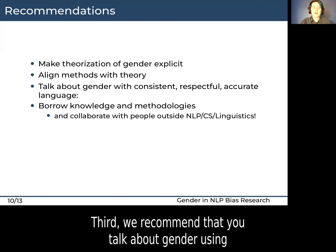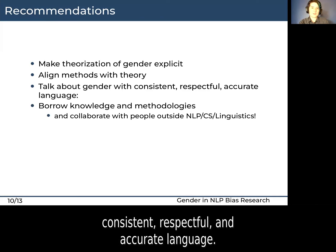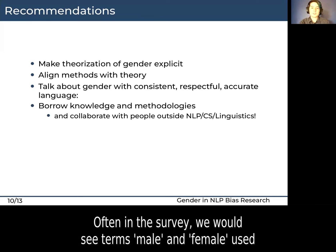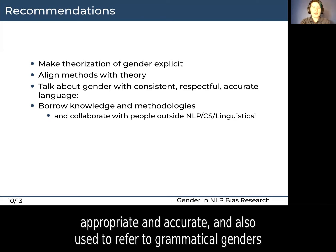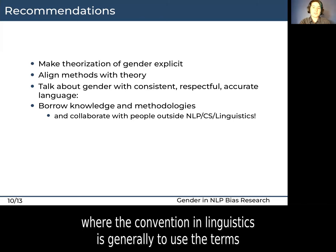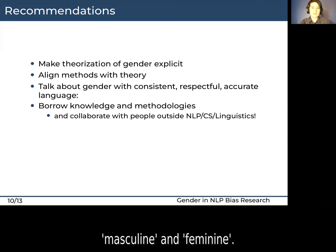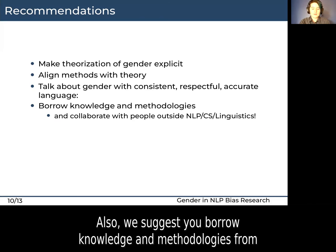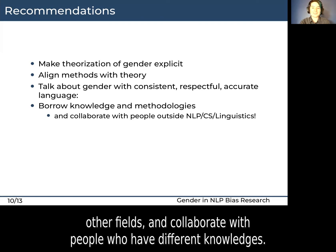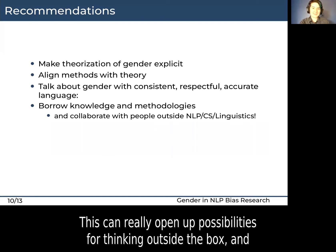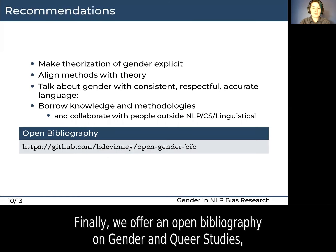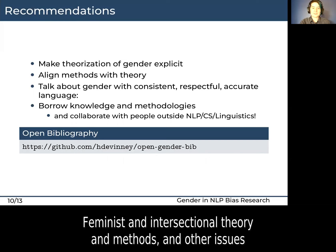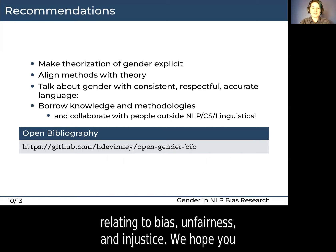Third, we recommend that you talk about gender using consistent, respectful, and accurate language. Often in the survey we would see terms like male and female used to refer to people, where men and women would be more appropriate and accurate, and also used to refer to grammatical genders, where the convention in linguistics is generally to use the terms masculine and feminine. We also suggest that you borrow knowledge and methodologies from other fields and collaborate with people who have different knowledges — this can really open up the possibilities for thinking outside the box and producing novel methods for being inclusive. Finally, we offer an open bibliography on gender and queer studies, feminist and intersectional theory and methods, and other issues relating to bias, unfairness, and injustice.